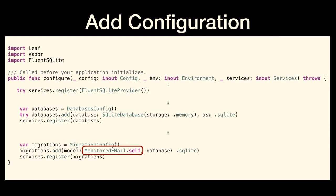Finally we add configuration. In configure.swift, we add database configuration lines — var databases with a DatabaseConfig. We tell it we have a SQLite database, we're going to store it in memory, and associate it with a tag. Then we have our migrations — we tell the migration that our model for this table is MonitoredEmail and we're going to use the SQLite database. With those six lines of configuration, all our tables are set up, and if we make changes to the class, the tables are altered automatically.